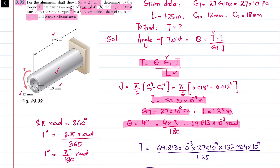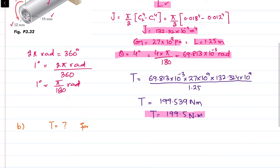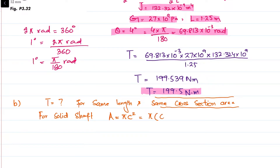Now moving to part B: find the angle of twist caused by the same torque T in a solid cylinder shaft of the same length and same cross-sectional area. So we have to find theta for the same length and same cross-sectional area as the hollow shaft.